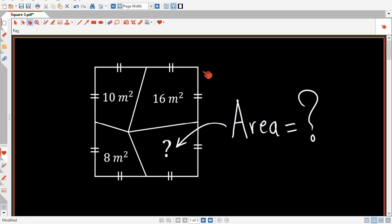So the problem is that we have this square here and we have an interior point. From this interior point we draw line segments to the midpoints of the square. That will divide the whole square into four regions. Three regions are of given areas: this area is 8 meters squared, this is 10, this is 16. So the question is to find, to solve for this unknown area.